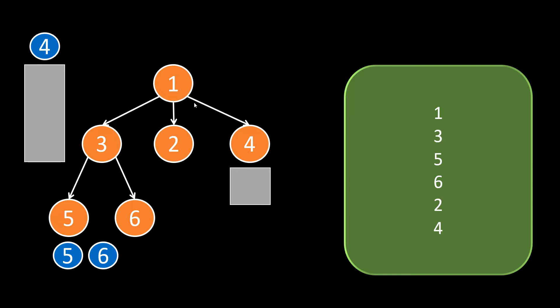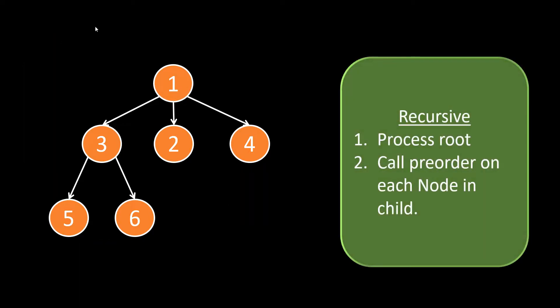One thing to notice is that we are going to process the root and then process each and every child of that particular node in the same way as we processed the root. So the recursive call becomes very easy — first we process the root, and then recursively call the pre-order traversal on each of its child nodes, which would be given to us in list form. Now let's quickly code this approach and then look at the iterative approach.